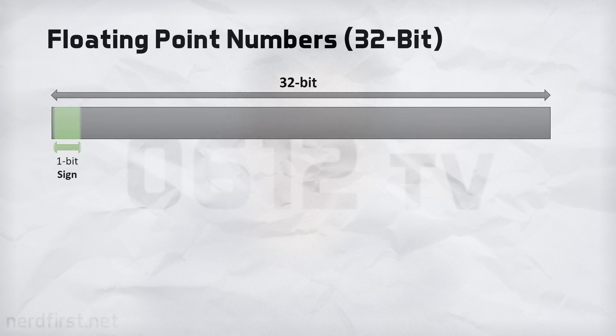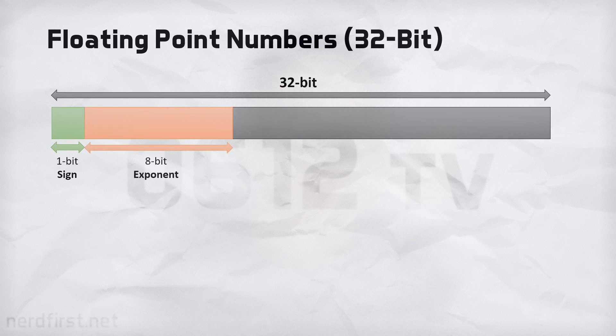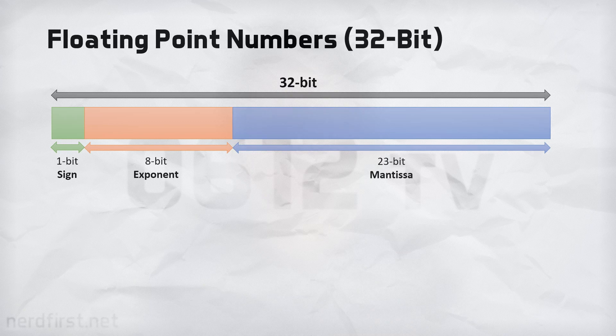This is where the floating point number comes into play. We're going to enter the world of 32-bit numbers. Every number we're going to talk about from this point on is made up of a total of 32 bits — that's how most computers deal with it. Instead of using the entire 32 bits to represent one number, we break up these bits into three parts, and they represent three different numbers in essentially a mathematical equation that we can eventually evaluate.